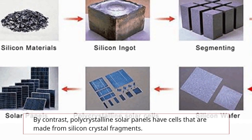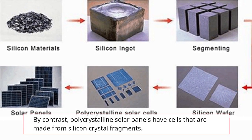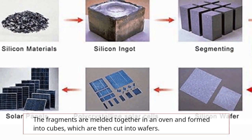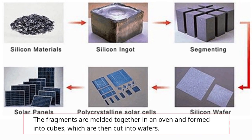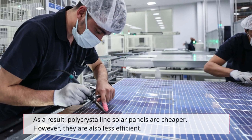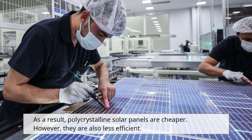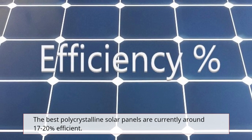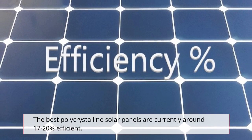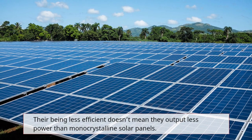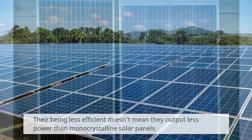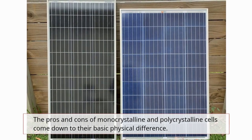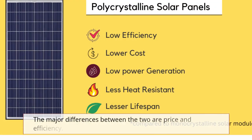By contrast, polycrystalline solar panels have cells made from silicon crystal fragments. The fragments are melded together in an oven and formed into cubes, which are then cut into wafers. As a result, polycrystalline solar panels are cheaper, however being less efficient — the best polycrystalline solar panels are currently around 17 to 20 percent efficiency. Being less efficient doesn't necessarily mean they output less total power than monocrystalline solar panels.